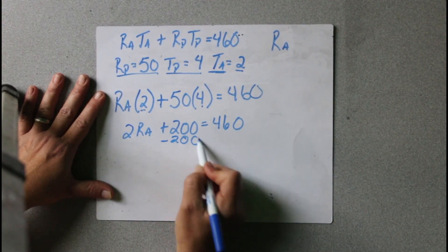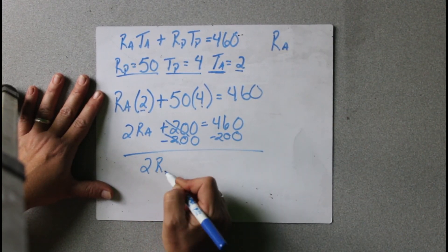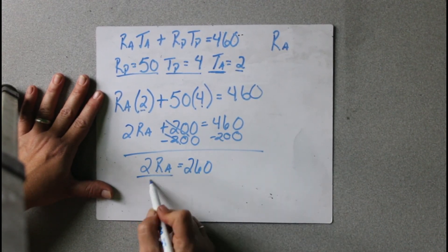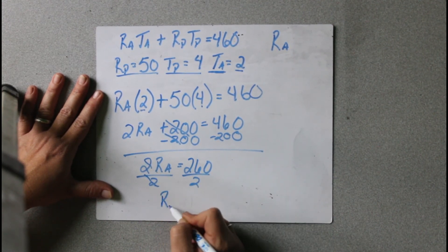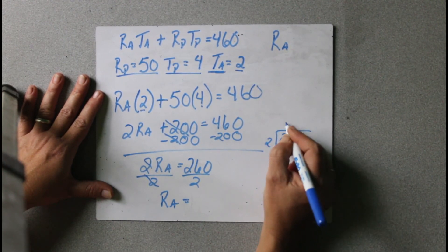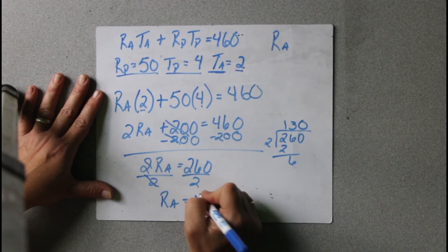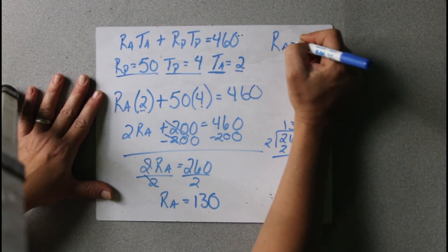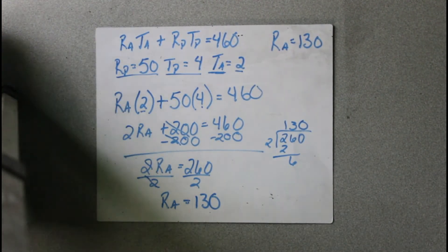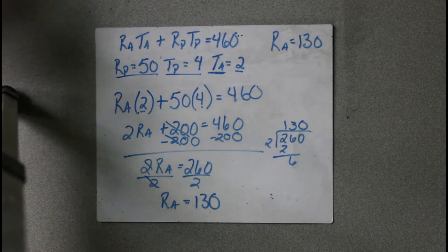Now we're going to do minus 200 on both sides, and we're going to get 2RA equals 260. Then we divide by 2, and we get RA equals 260 divided by 2, which would be 130. Let me double check with my work and make sure that's right. Yes, that is correct — 130. So RA equals 130.